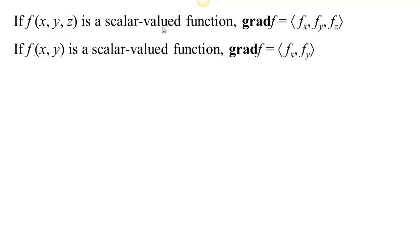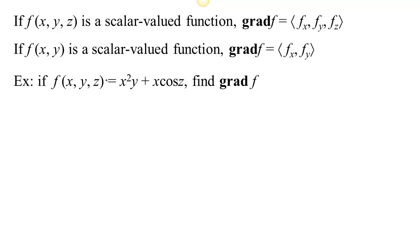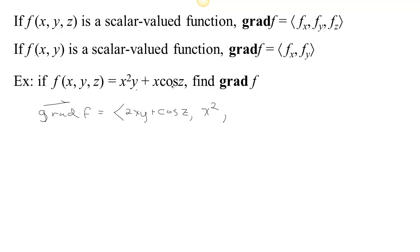Let's do a quick example. If we have a function that depends on three variables, the gradient is going to be a vector field — a function from R³ to R³. I use a bold letter for the name because it's a vector valued function. The first component is the partial derivative with respect to x: the derivative of x²y is 2xy, and the derivative of x·cos(z) with respect to x is cos(z). The second component is the partial with respect to y: the derivative of x²y with respect to y is x². The third component is the partial with respect to z: the derivative of x·cos(z) is minus x·sin(z). So we took a scalar valued function with three inputs and one output and made a function with three inputs and three outputs. The gradient gives us interesting information about the original function.